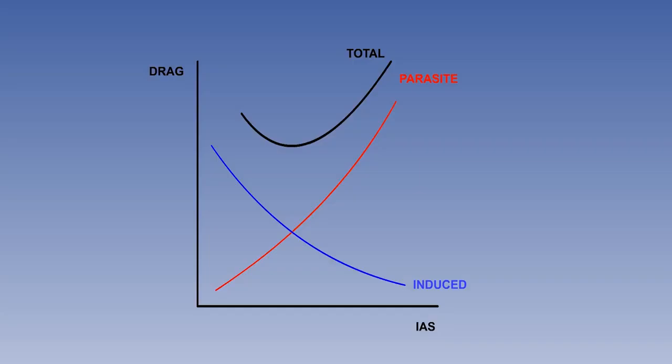Because of the way that the two component types of drag vary with speed, the speed at which total drag is at its minimum occurs where the induced and parasite drags are equal. This minimum drag speed, usually referred to as min drag speed or VMD, is an important reference for many aspects of aircraft performance.